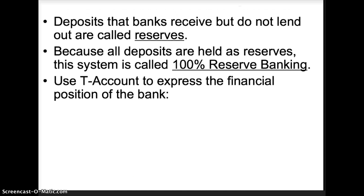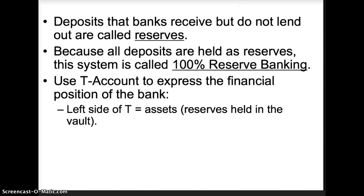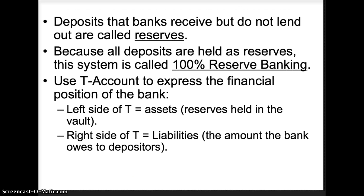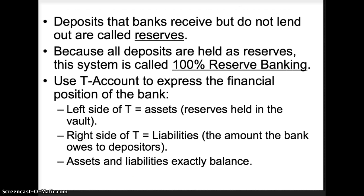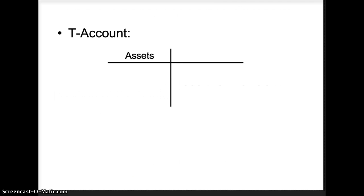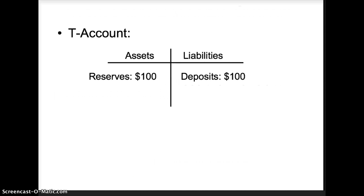We are going to use a T-account to express the financial position of the bank. If you've taken an accounting course this will be easy; if not, don't worry — we'll work with very simple T-accounts. The left side of the T is the bank's assets, which are the reserves held in the vault. The right side is the bank's liabilities, which is the amount the bank owes to depositors. Assets and liabilities will exactly balance. Under liabilities, deposits equal $100; under assets, reserves equal $100. Assets and liabilities exactly balance, so we know we've set everything up correctly.